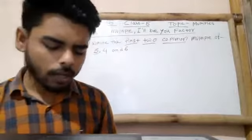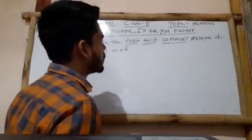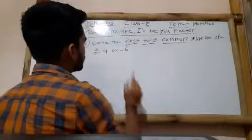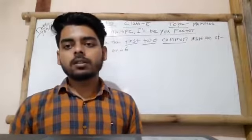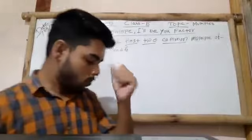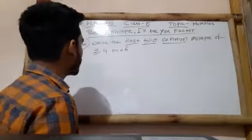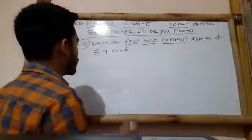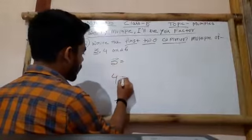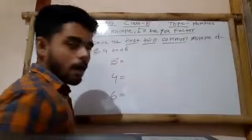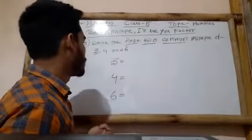Here is the next question: write the first two common multiples of 3, 4, and 6. We all know how to determine multiples of a number. To do this question, you have to determine the multiples of these three numbers — first 3, then 4, and then 6. I am going to show you how to find the multiples of these three numbers.